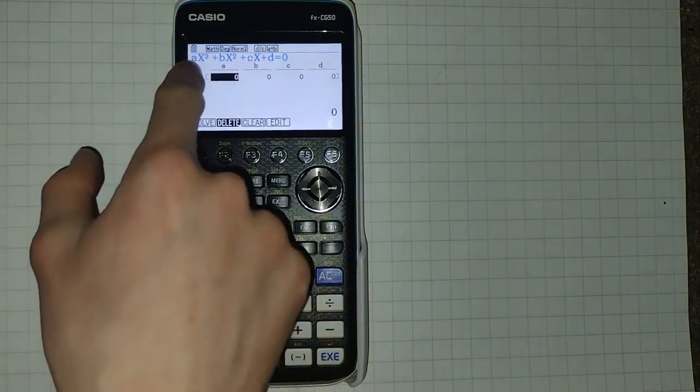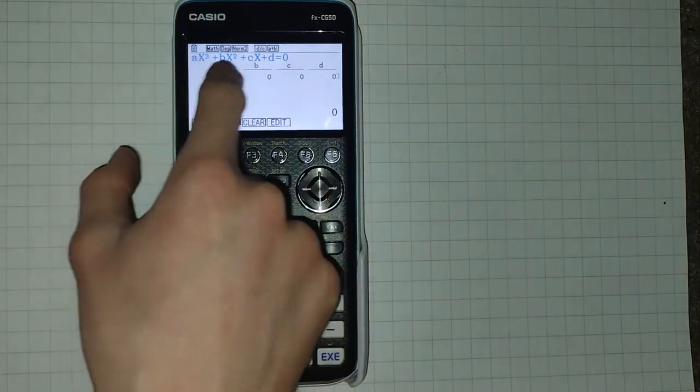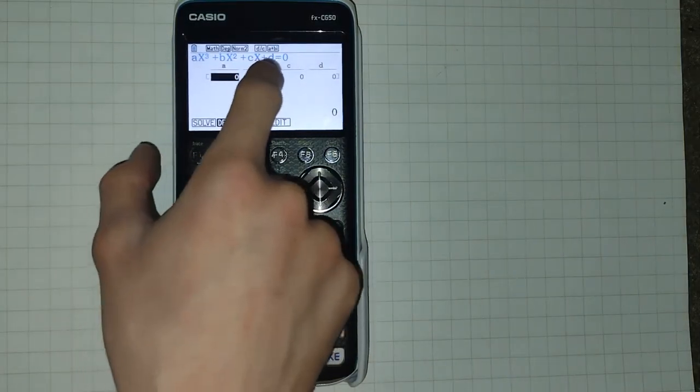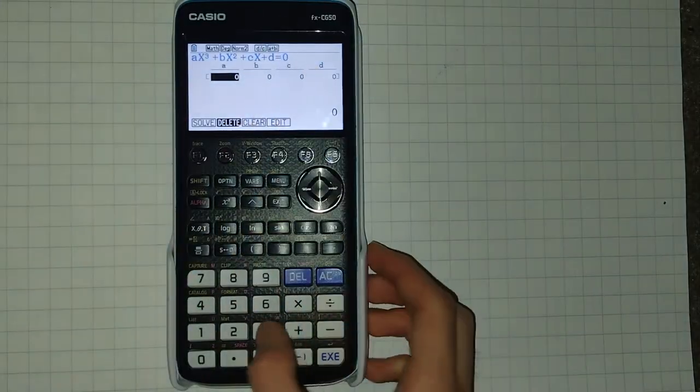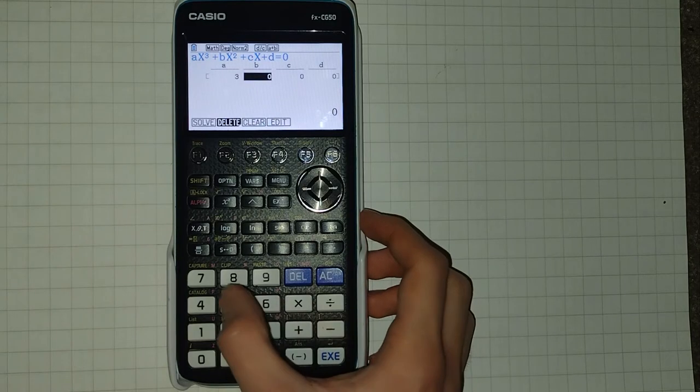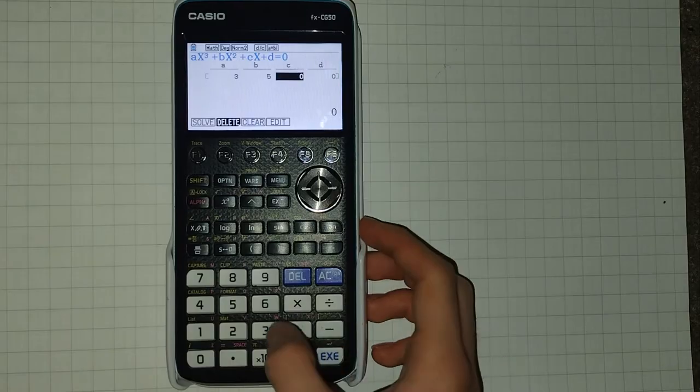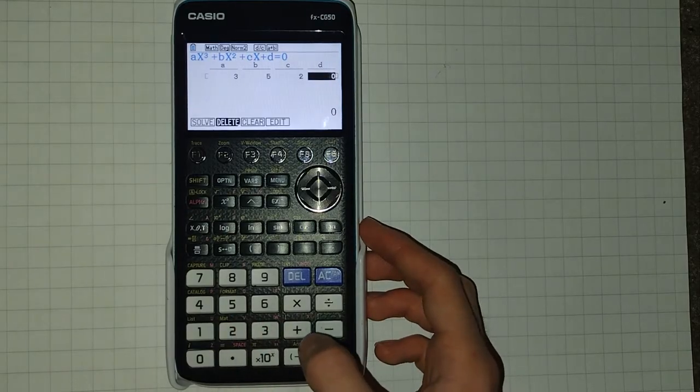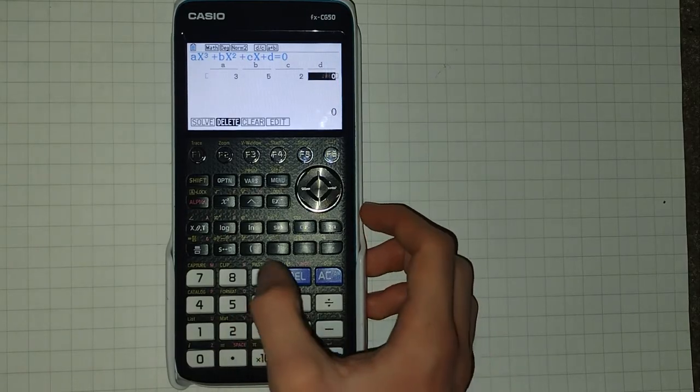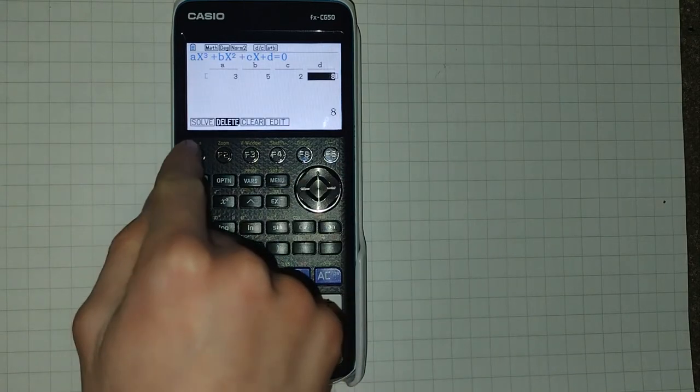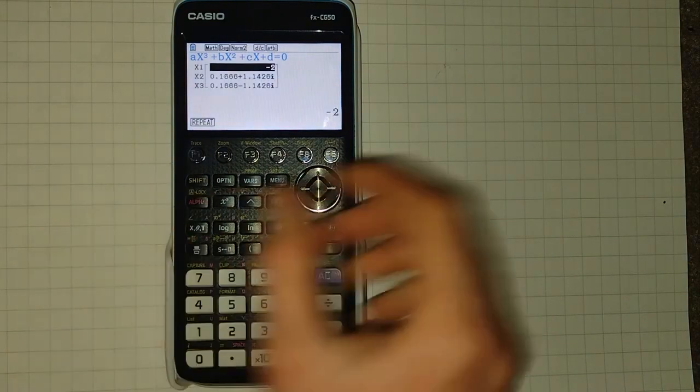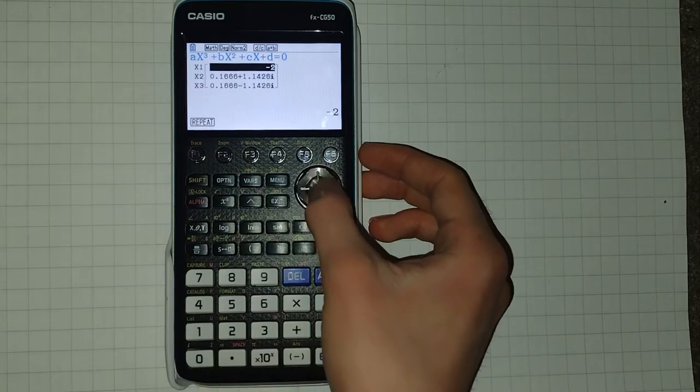You then enter your coefficients, the things in front of the x cubed, x squared, x, and also the constant here, d. So 3x cubed plus 5x squared plus 2x plus 8. We then click F1 for solve, and it's given us our three solutions.